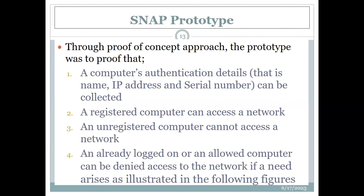Through a proof-of-concept approach, we were able to prove the following: first, that the model can actually collect authentication details — that is the name of the computer, the IP address, and the serial number. Second, it was proven that a registered computer can access the network; alternatively, if the computer is not registered, it cannot access the network. Fourth, the prototype also showed that an already logged-on or allowed computer can be denied access to the network if a need arises.